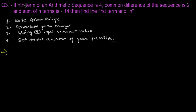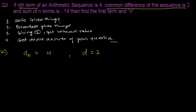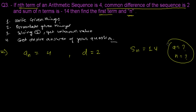The nth term of the arithmetic sequence is 4, so aₙ = 4. The common difference d is given as 2. The sum of n terms is minus 14, so Sₙ = -14. We need to find the first term a and the number of terms n.